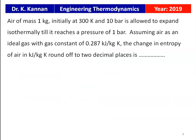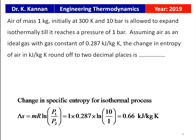From the 2019 question paper: air of mass 1 kg initially at 300 K and 10 bar expands isothermally to 1 bar. With gas constant R = 0.287 kJ/kgK, the change in entropy for the isothermal process is ΔS = MR·ln(P1/P2) = 1 × 0.287 × ln(10/1) = 0.66 kJ/kgK.